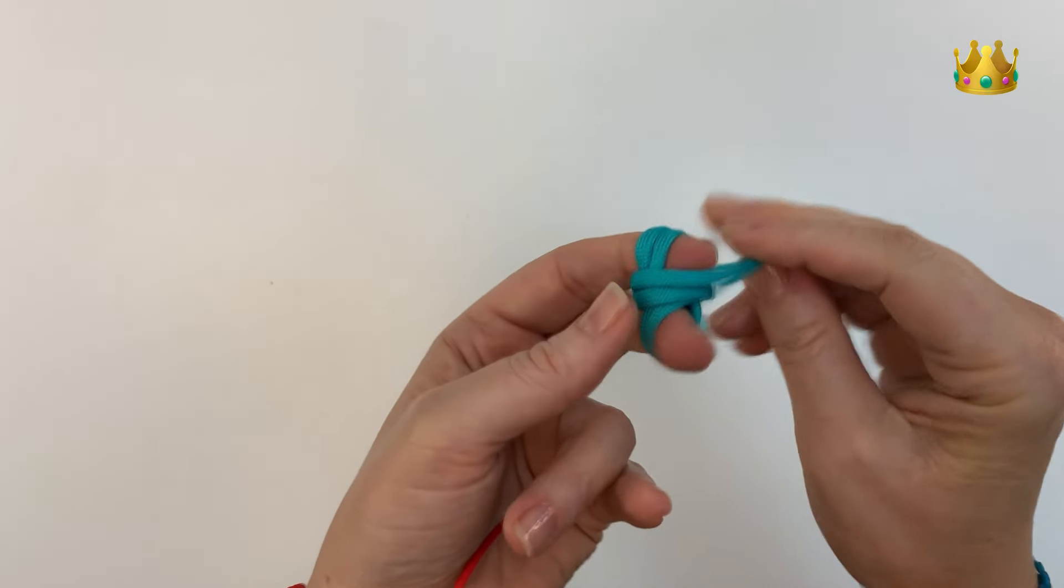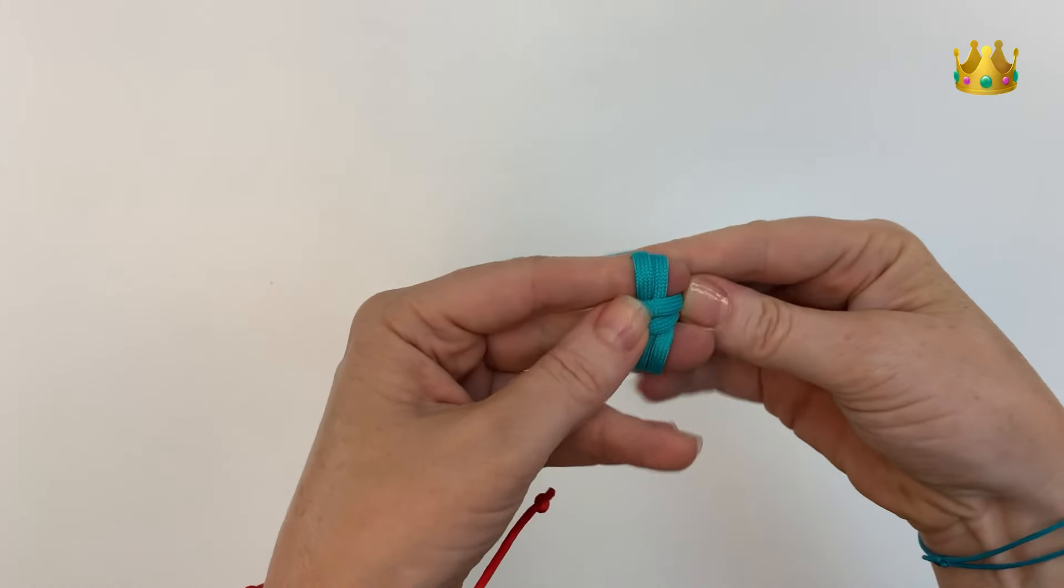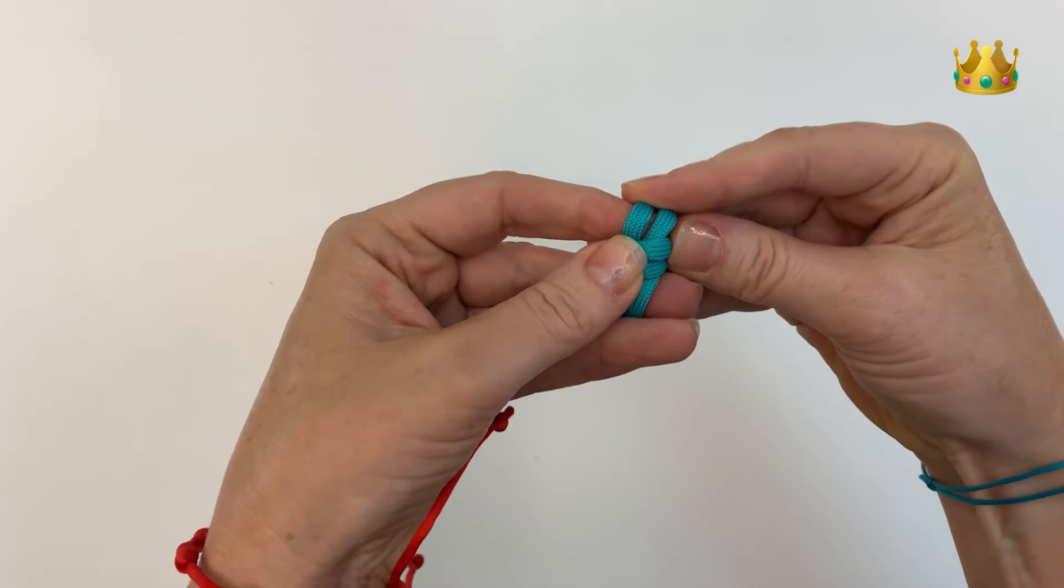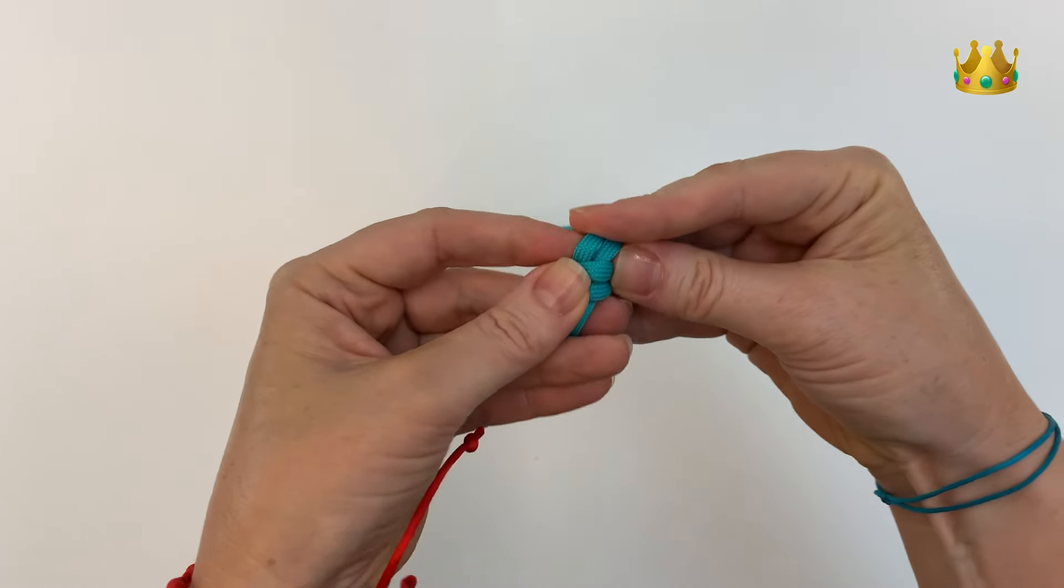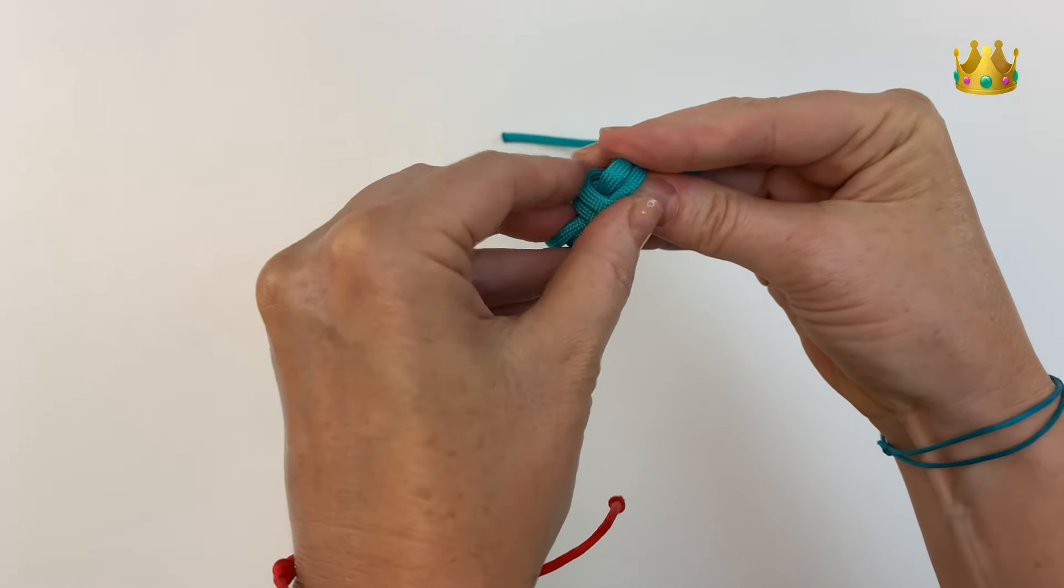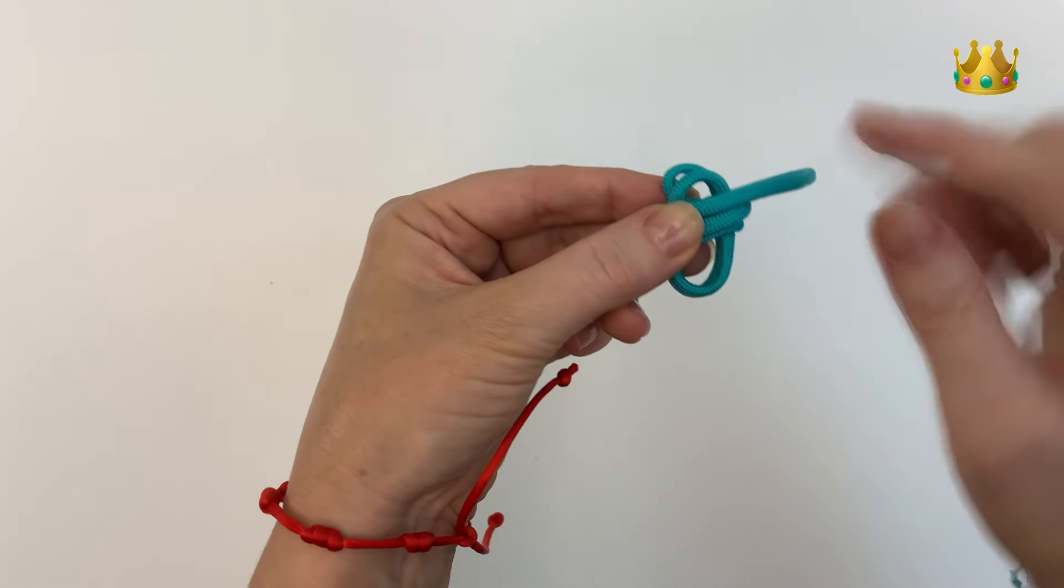Once we've got our two layers coming around between our fingers, we gently hold our knot in that same position and remove it from our fingers. Gently hold it all in place and turn the knot to the left so we can see through the top and bottom loops.